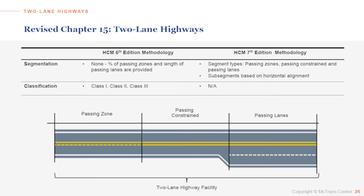The biggest difference in the new method for two-lane highways is that now we have different segment types that we can use to create facilities. We have three main segment types: passing zones, passing constraints, and passing lanes. With these three, we can create any two-lane highway facility that we want.